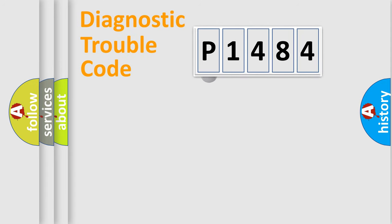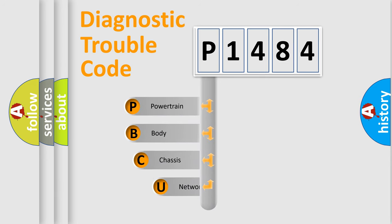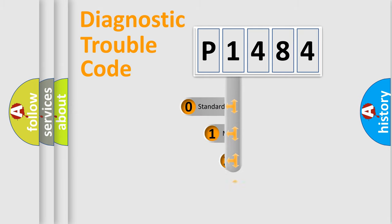First, let's look at the history of diagnostic fault code composition according to the OBD2 protocol. We divide the electric system of an automobile into four basic units: powertrain, body, chassis, and network. This distribution is defined in the first character of the code.